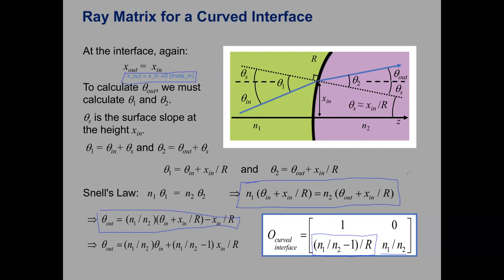That's the last new thing for today. On Wednesday, we're going to take these three results — free space, flat interface, and curved interface — and use them to build the ray matrix for a lens. A lens is essentially two curved surfaces with some space in between, so we can use matrix multiplication to get the matrix for this more complicated object.